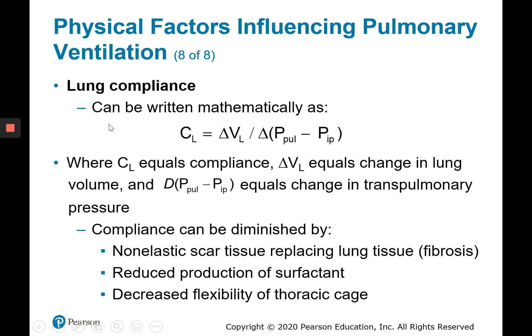Lung compliance can be written mathematically, where C sub L is compliance, comparing changes in lung volume to the difference between intrapulmonary pressure and intrapleural pressure — the transpulmonary pressure. Things that could reduce lung stretchiness include development of scar tissue, since fibrosed scar tissue doesn't stretch; reduced production of surfactant, similar to IRDS; and decreased flexibility of the thoracic cage, which limits the ability to increase lung volume enough for adequate pulmonary ventilation.